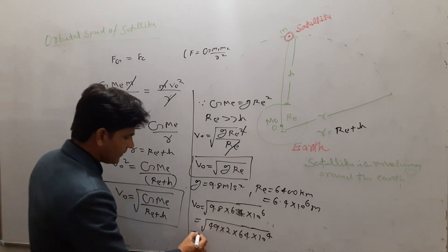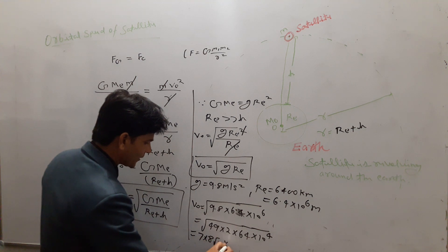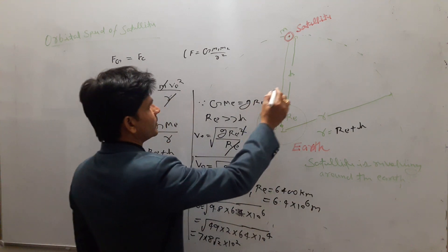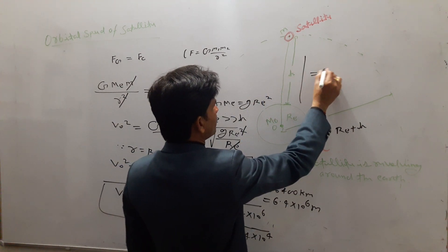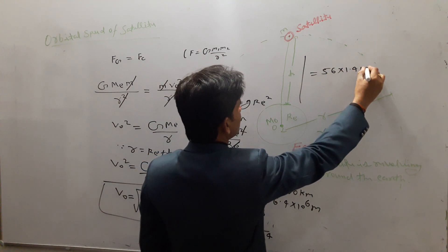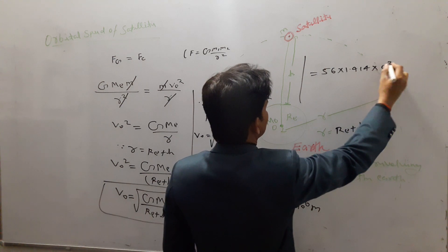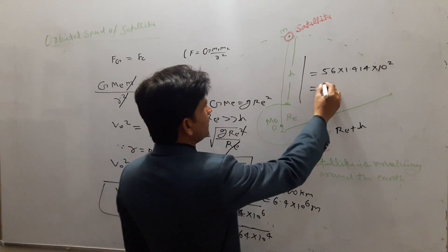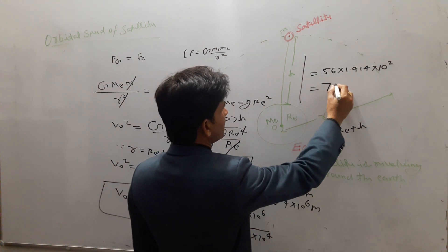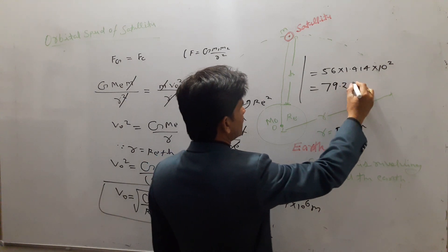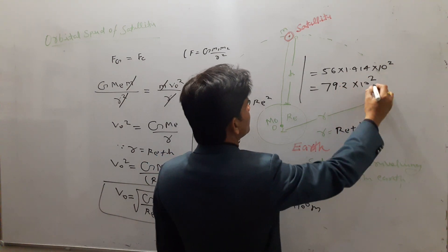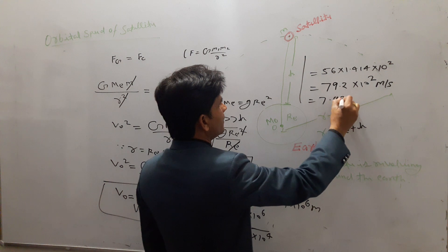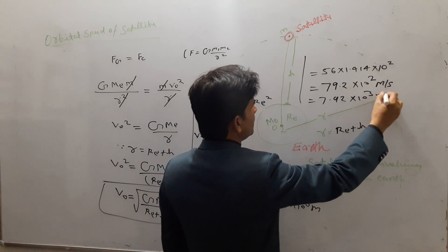Now, 56 × √2. The value of √2 is 1.414, so this equals 56 × 1.414 × 10². On multiplying this, we get 79.2 × 10² m/s. That is 7.92 × 10³ m/s.